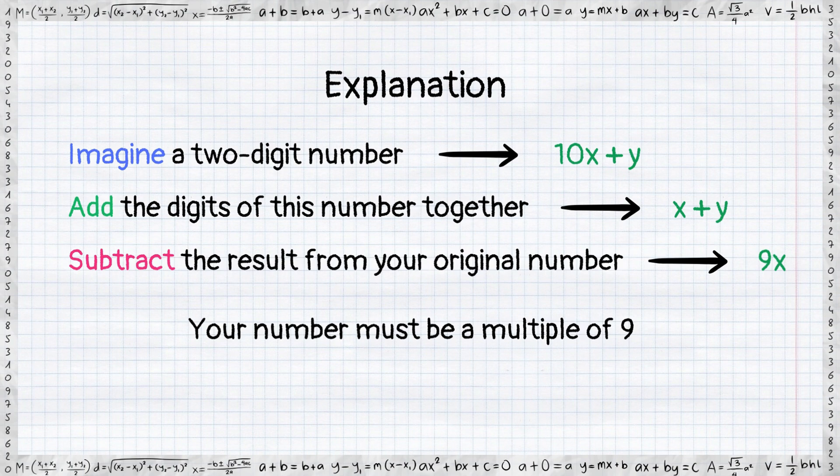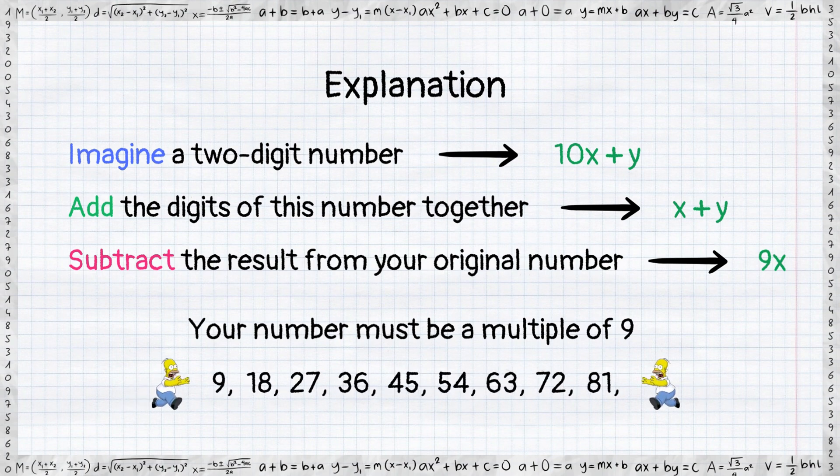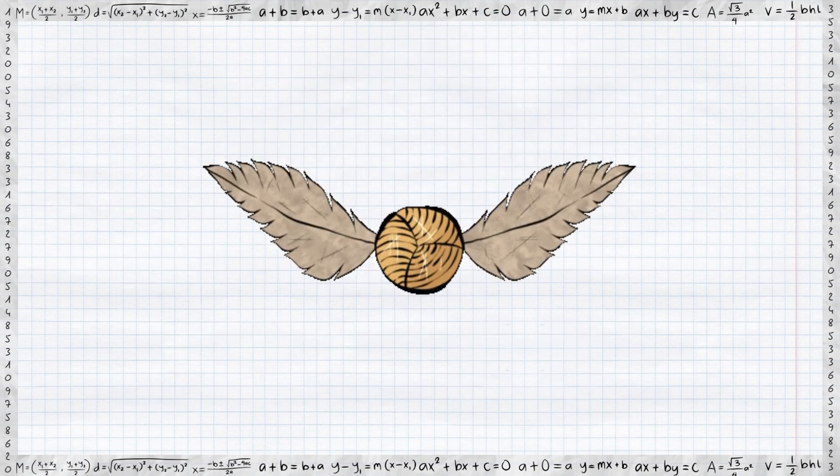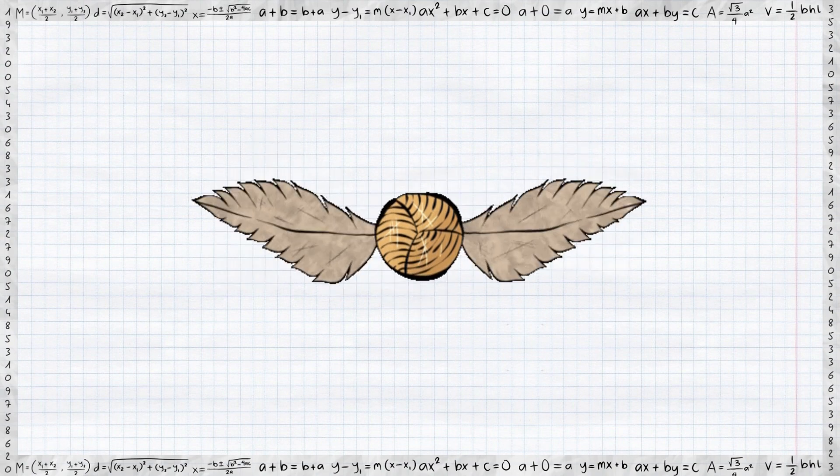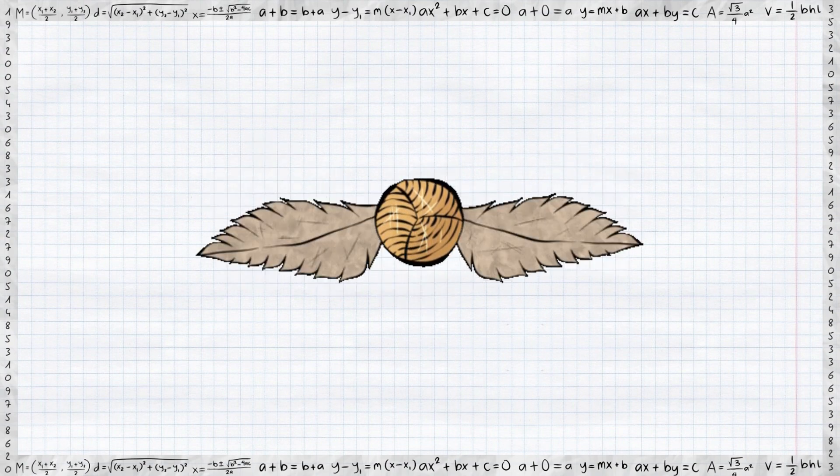In the table, whenever the number is a multiple of 9, you will always see Homer Simpson. This is the magic of mathematics. See you in the next episode.